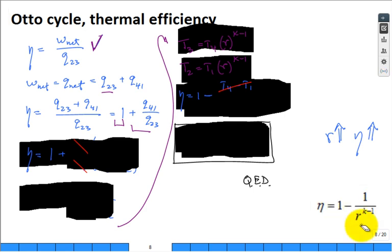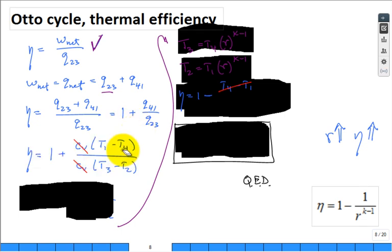What are we going to do at this point? Well, this is based on constant specific heats. So substitute what is Q 4 to 1 and what is Q 2 to 3 in terms of the temperatures: T1, T4, T2, T3. What cancels? The specific heats.